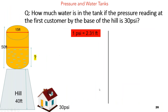Now a more complex, realistic pressure problem you might see in the distribution. You might have a tank located on top of a hill, serving homes in the area. As you make your daily rounds, you grab a pressure reading at one of the homes. Without any other way of knowing how much water is in your tank, you can use the pressure in the distribution to determine how much water is left. Question: how much water is in the tank if the pressure reading at the first customer at the base of the hill is 30 PSI?